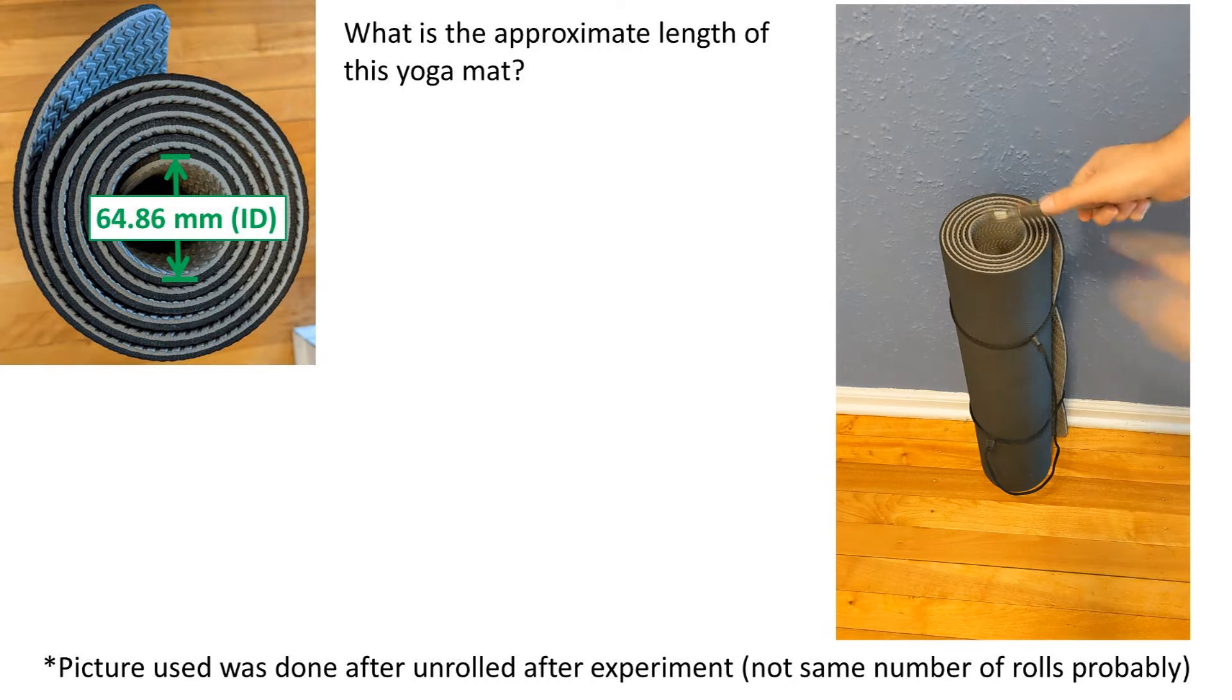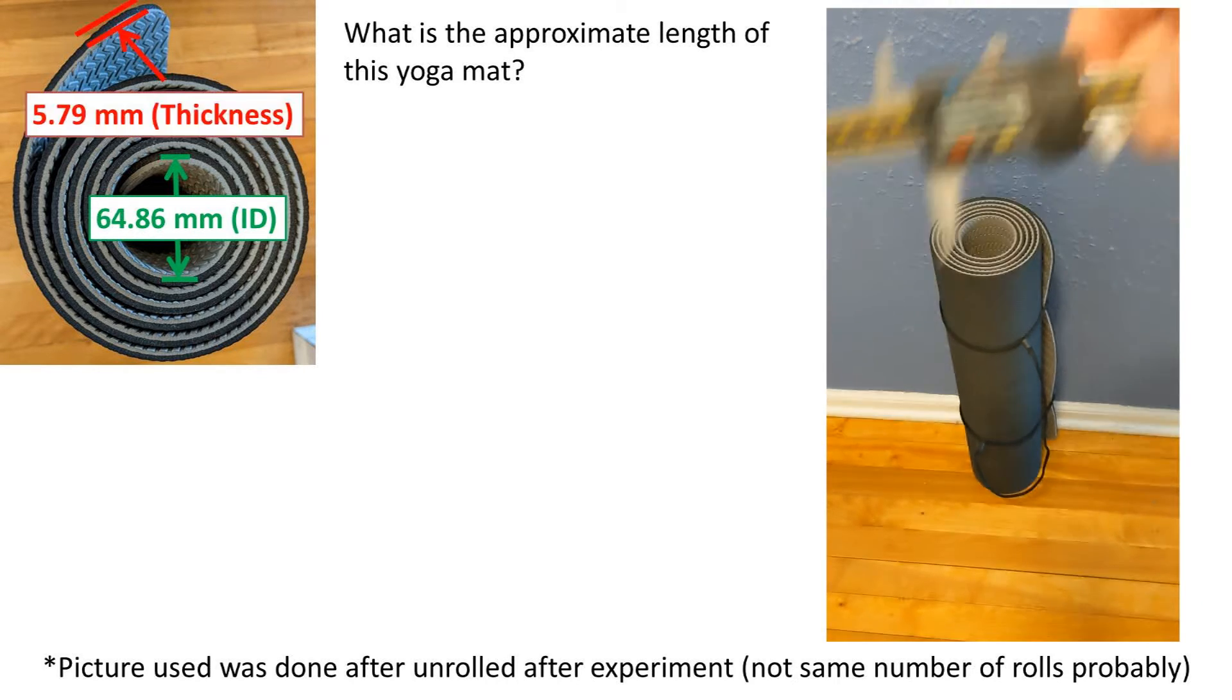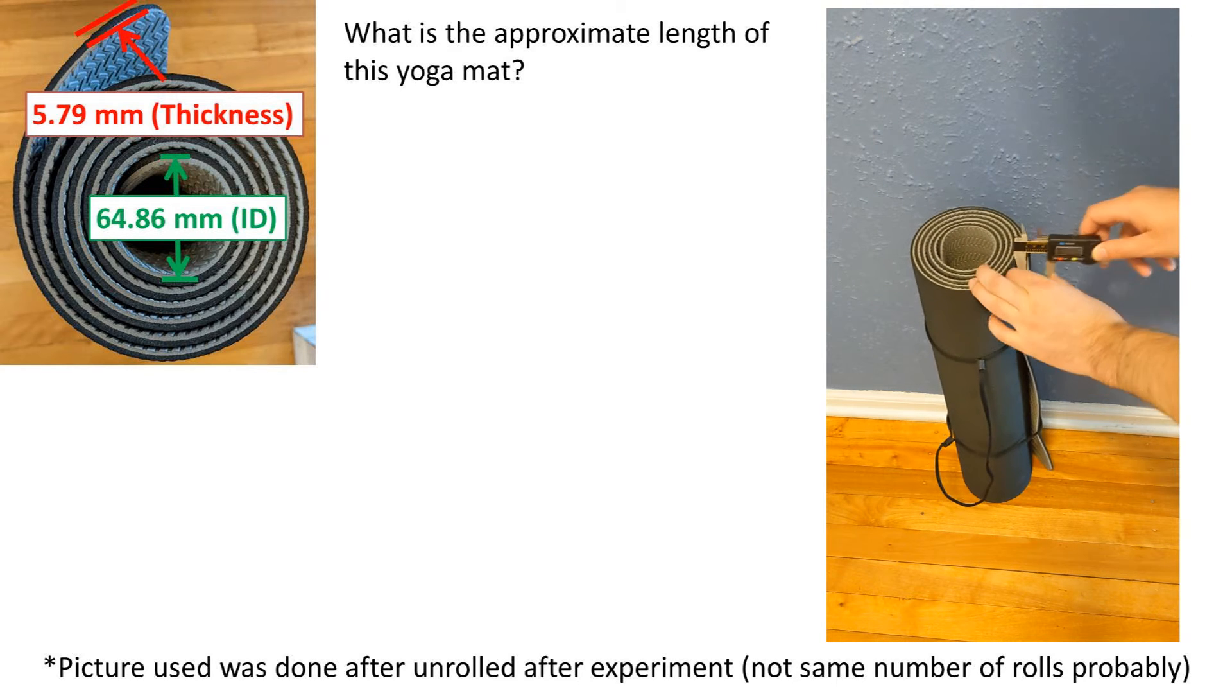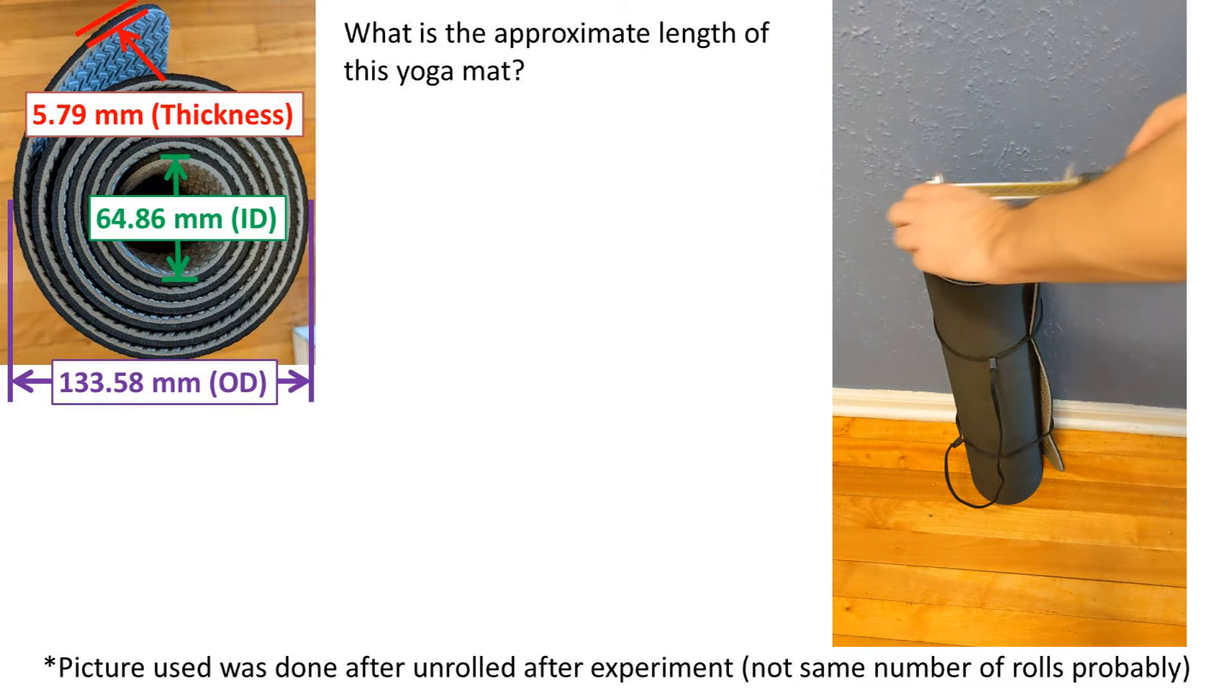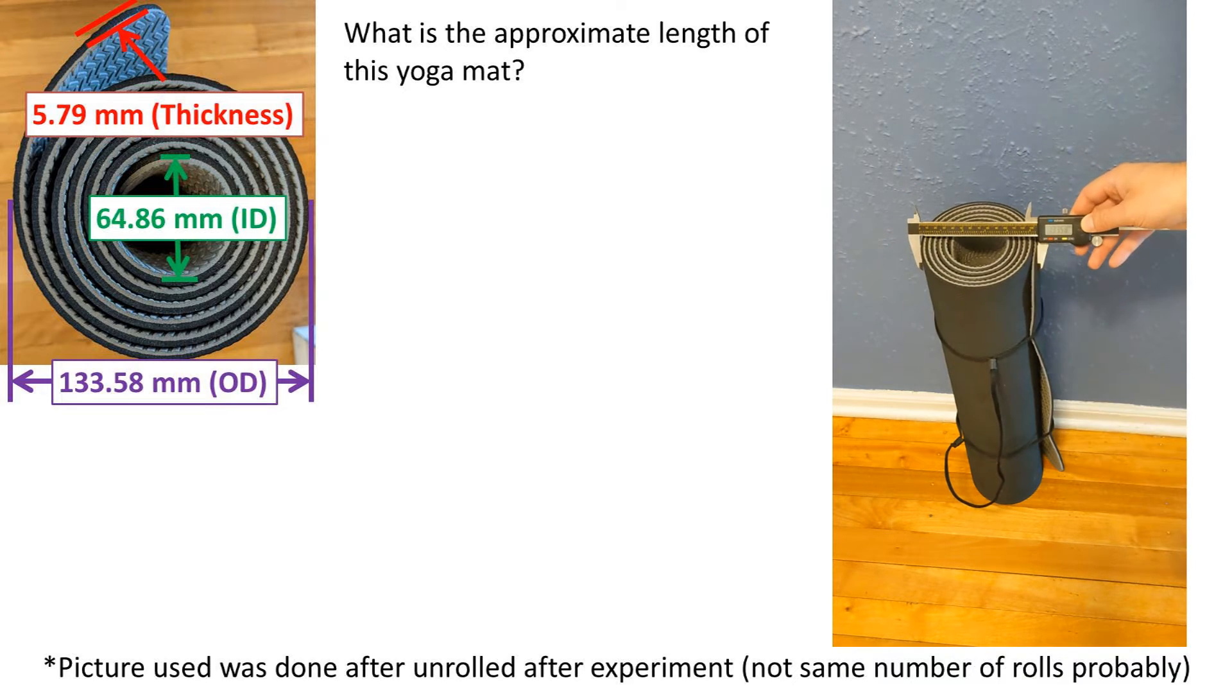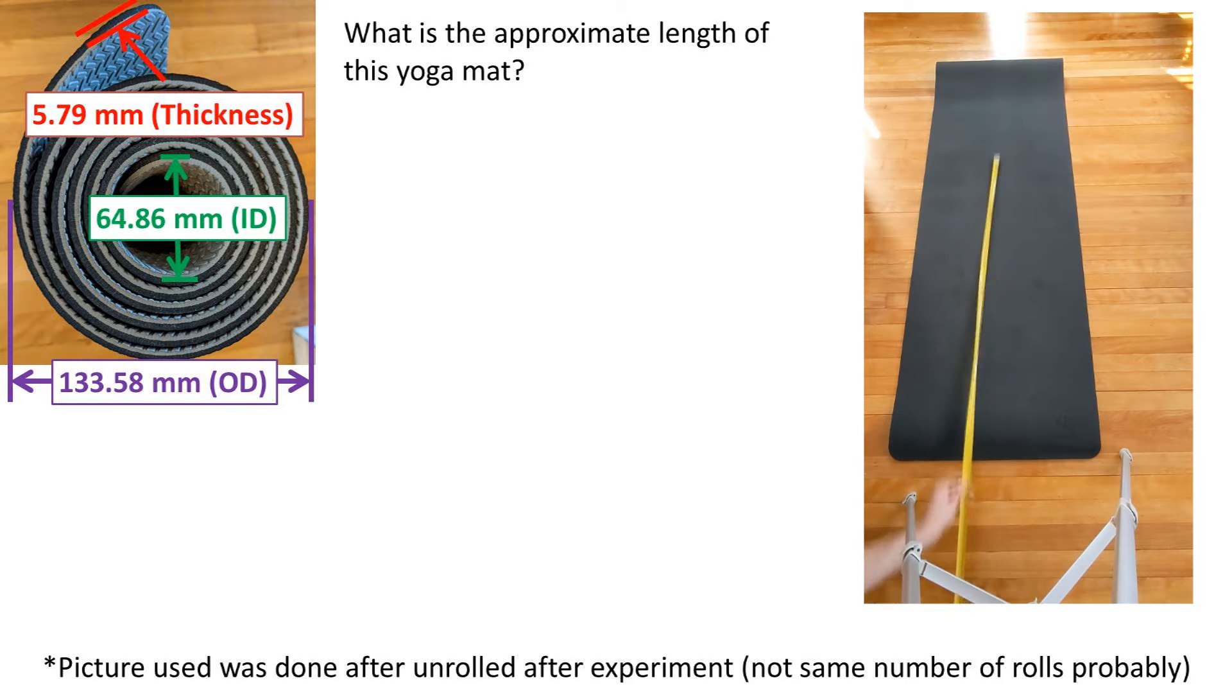The internal diameter which in this case is 64.86 millimeters, the thickness of the material which is 5.79 millimeters, and the outside diameter which is 133.58 millimeters. How do we go about solving this one?